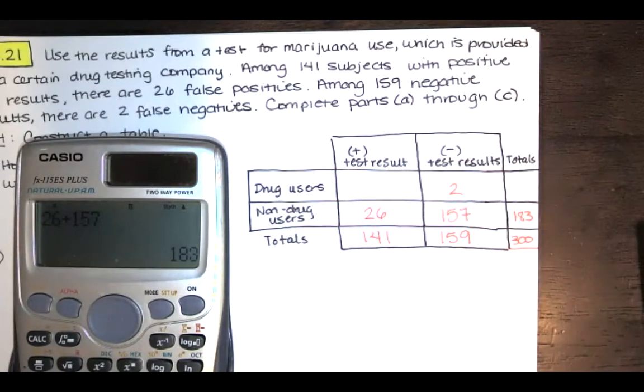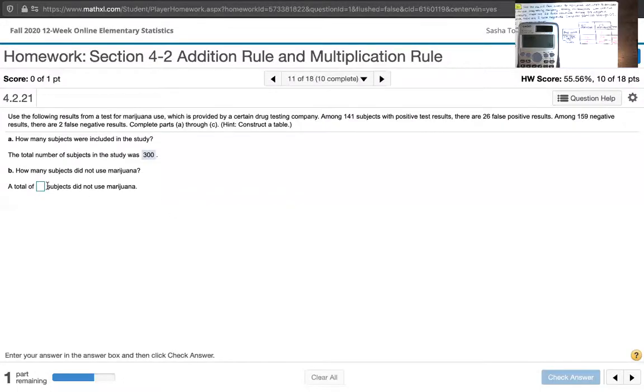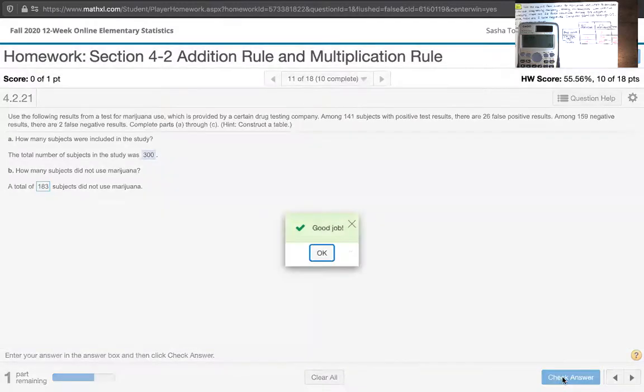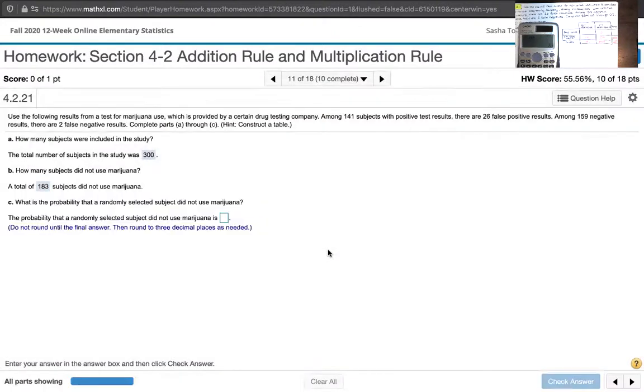So I'll go back to sharing my screen with you. All right, there was a total of 183 subjects that did not use marijuana. Great. And then the last question says, what is the probability that a randomly selected subject did not use marijuana?